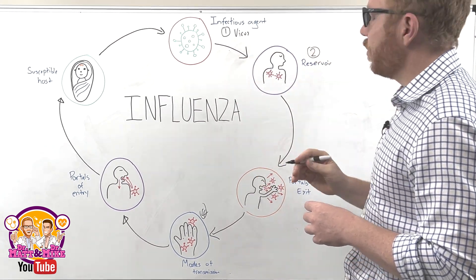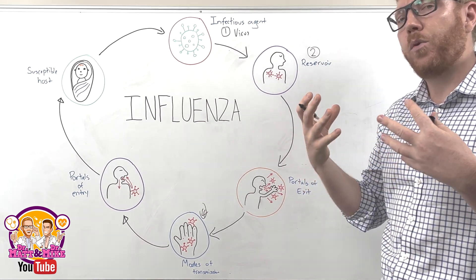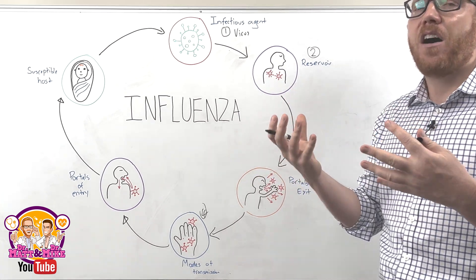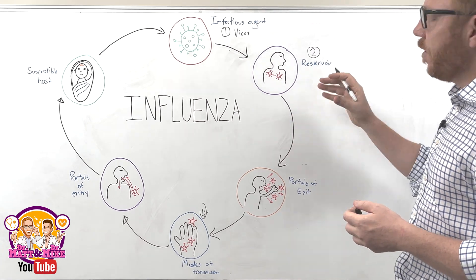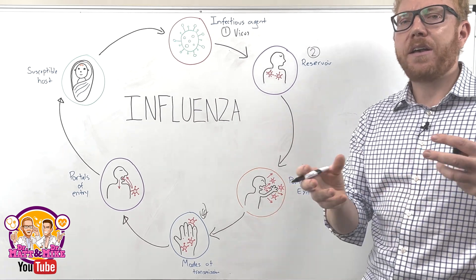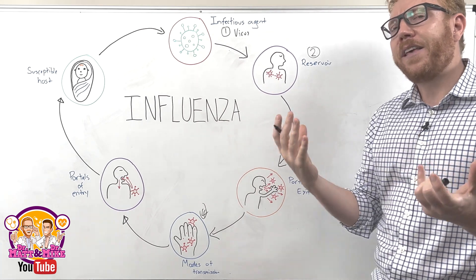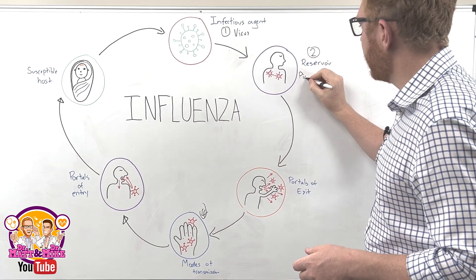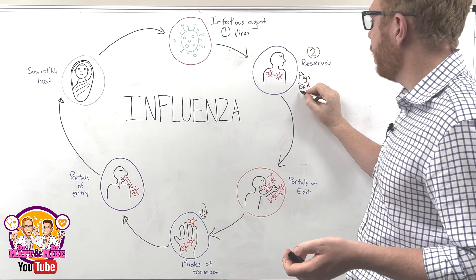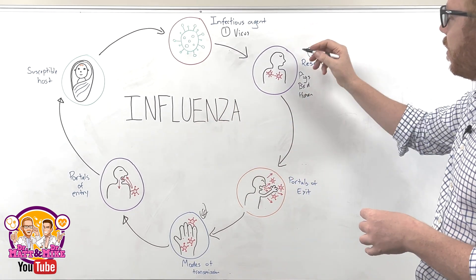Step two is the reservoir. This is where the infectious agent hangs out, where it can be sustained and live in a viable state. This could be animals, soil, water, sewerage, or food. But for influenza, it's more in the animal — so it could be in pigs (swine flu), birds (bird flu), and humans (human influenza). So this is the reservoir.